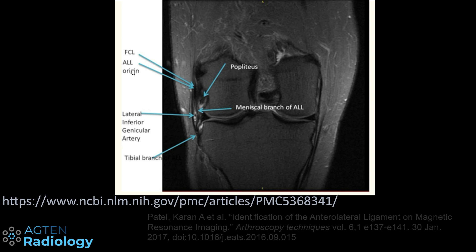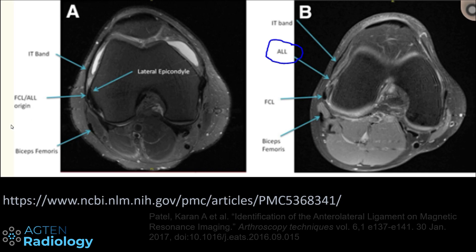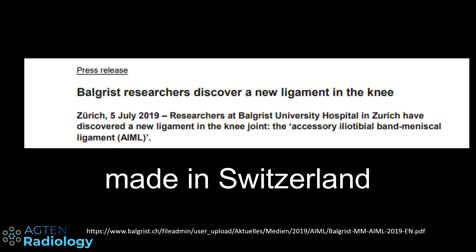A 2017 article also covering the ALL nicely shows that it's not really separable from the fibular collateral ligament at its origin. Then we have the meniscal branch going down and the lateral inferior genicular artery running deep to it. On cross-sectional MRI imaging the ALL appears as a very tiny ligament — it's not a very obvious structure.